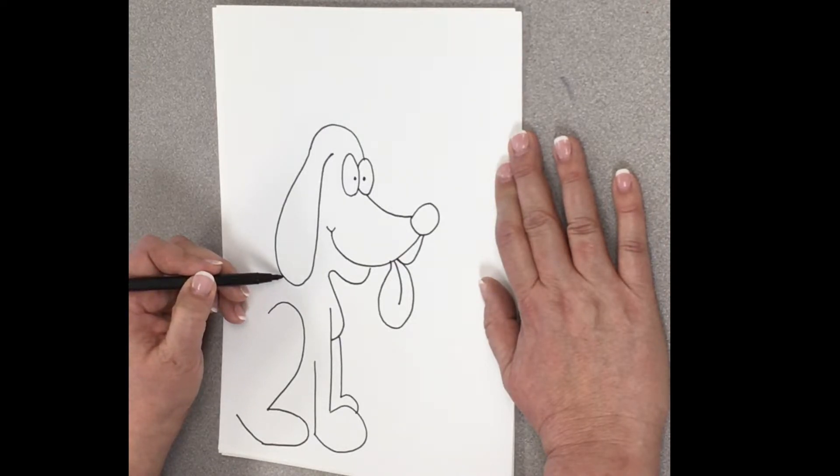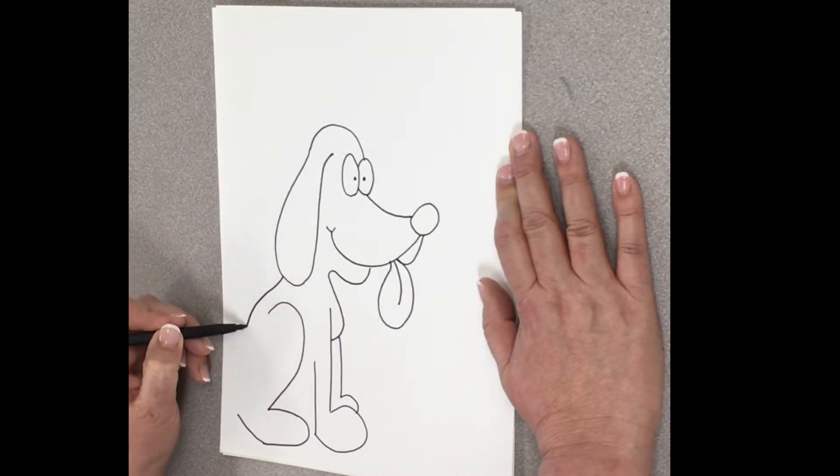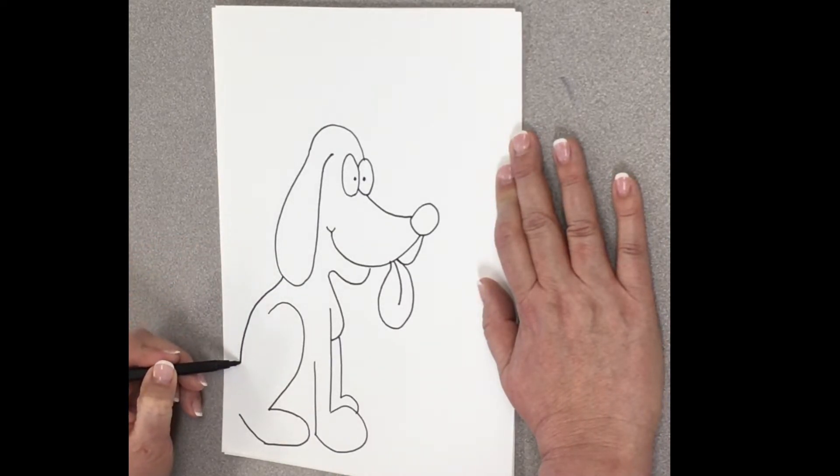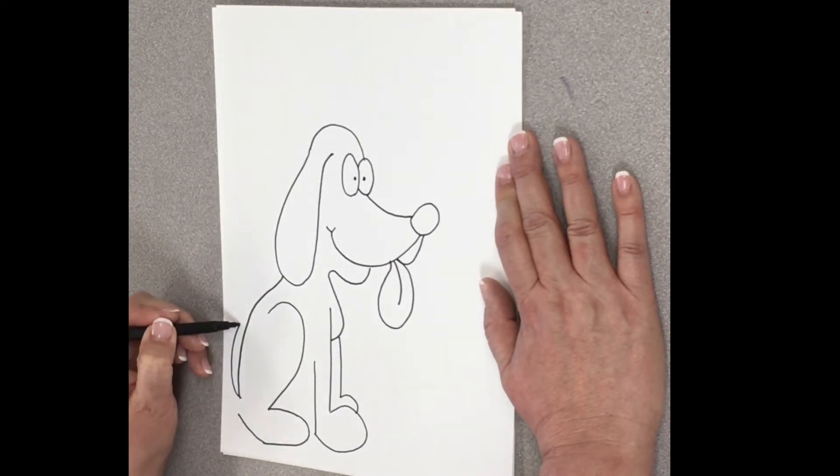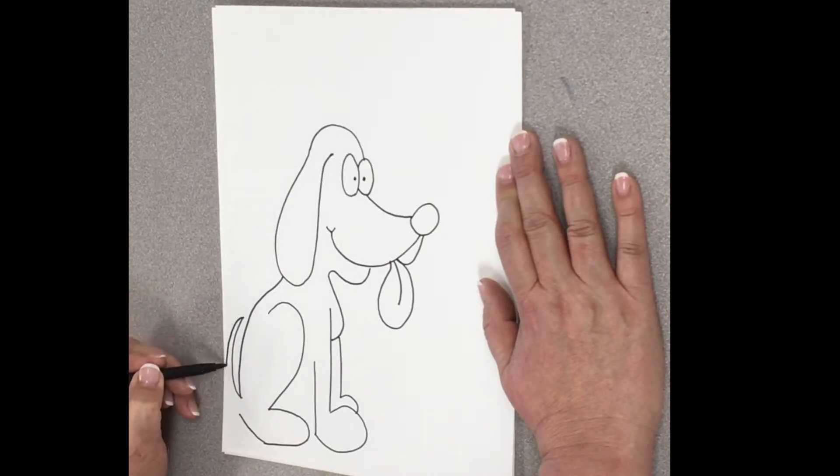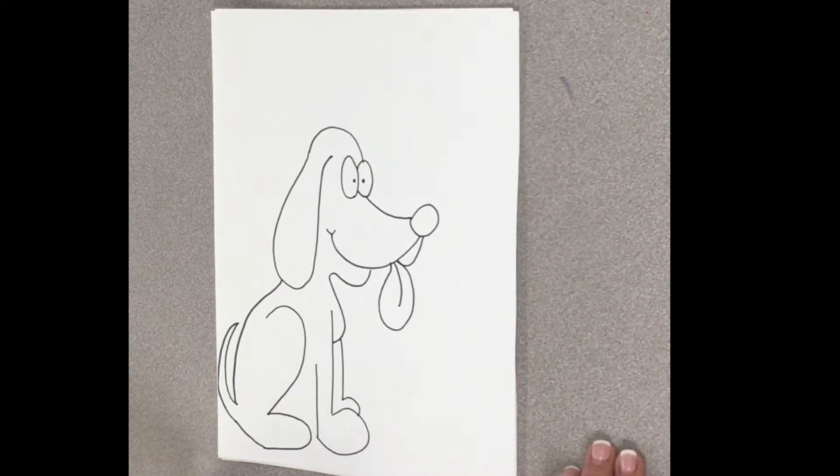Alright, so, I've got to draw his back. So, I'm going to start right here. I'm just going to make a nice line down. And, here's his little dog butt. And, then here's his little tail. Oh, I'm almost running out of room.